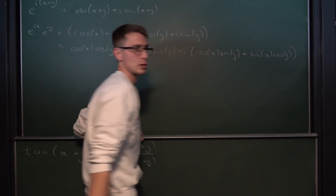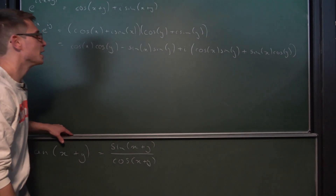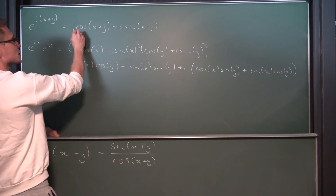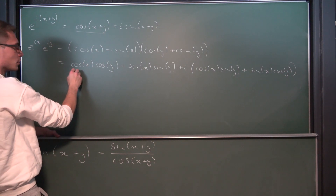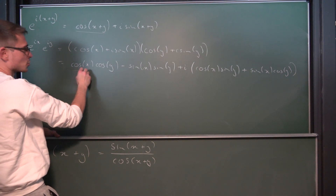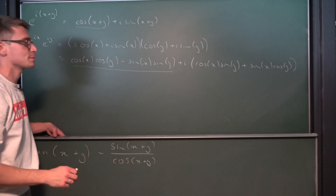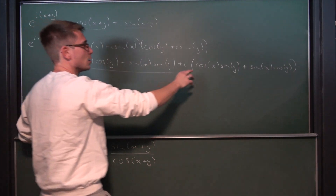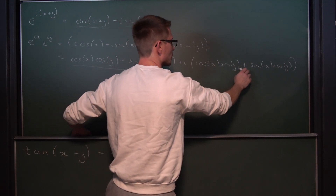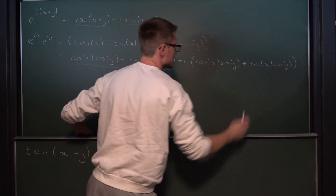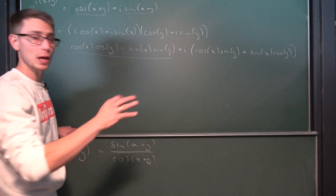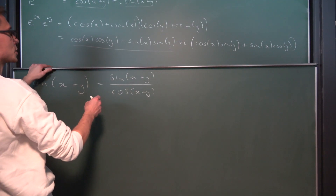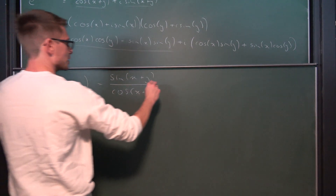By comparing the real and imaginary parts, we get that cosine of x plus y equals cosine x times cosine y minus sine x times sine y. And the sine of x plus y equals cosine x times sine y plus sine x times cosine y. Now we can plug everything in and see if we can actually simplify something.